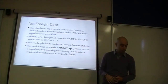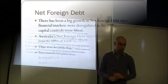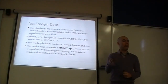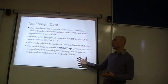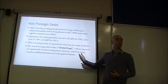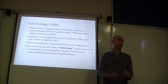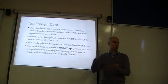Net foreign debt is now up to 50% of GDP, whereas net foreign equity has not grown in the same way. Too much foreign debt risks what's called a debt trap — where interest is repaid only by borrowing more money, which in turn requires additional interest to be paid in the future, increasing the size of the debt. Some economists have argued Australia has experienced this, with foreign debt growing from 6% to 50% of GDP through persistent current account deficits.